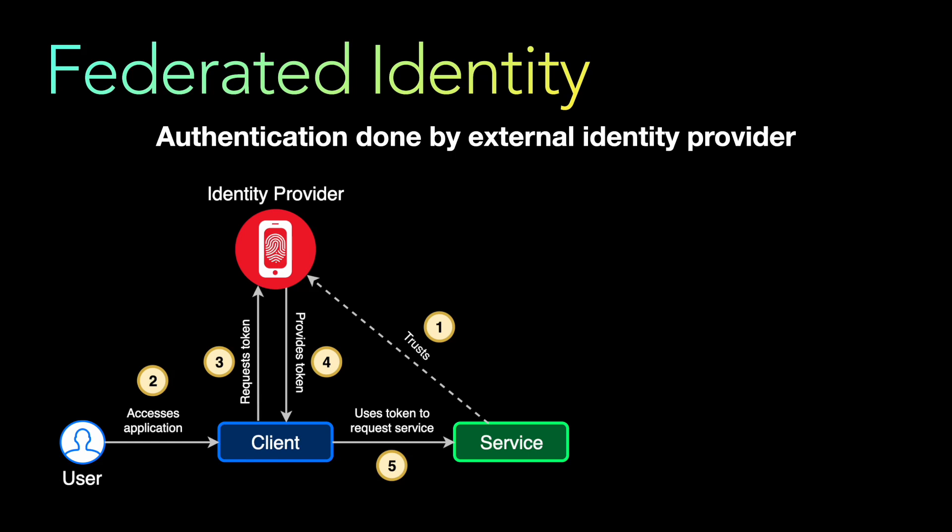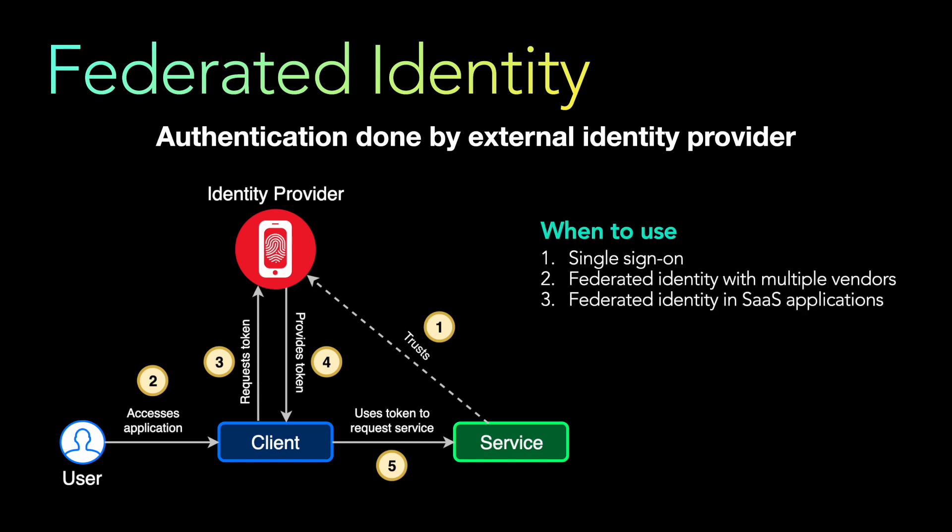The baseline requirement is that the service must already trust the identity provider. If the service does not trust the identity provider, the token passed from the client to the service will fail validation. This model is also called claim-based access control, because the token the identity provider issues contains a claim specifying what the client is allowed to access in the service.